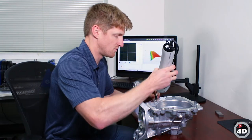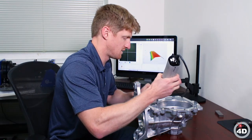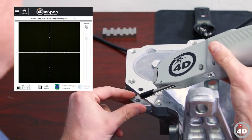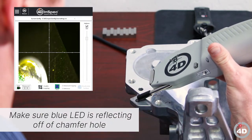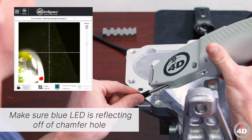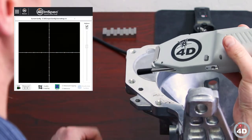I'll measure this bolt hole right here, put this focus aid up to the part, make sure my blue LED is reflecting off of this chamfer, and when I get it in focus I will click the button on top of the InSpec to take a measurement.